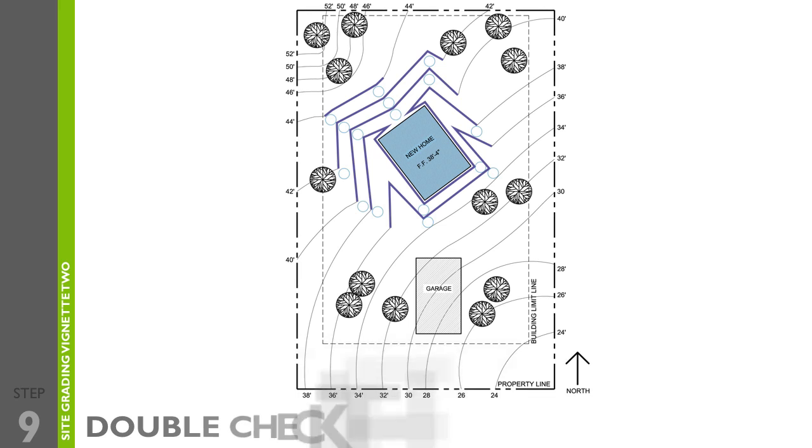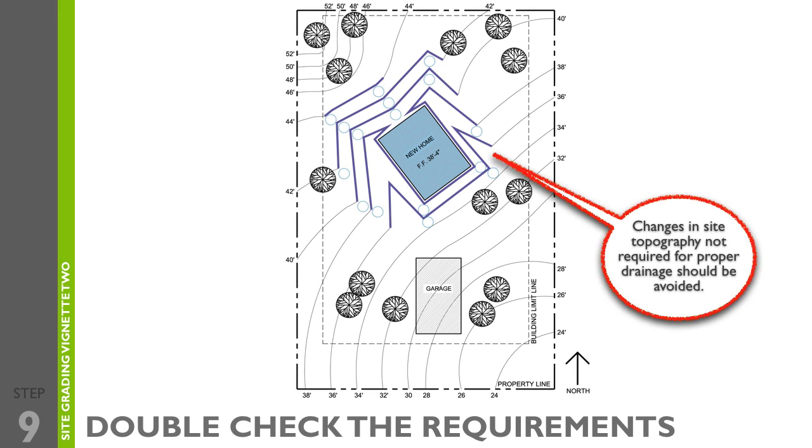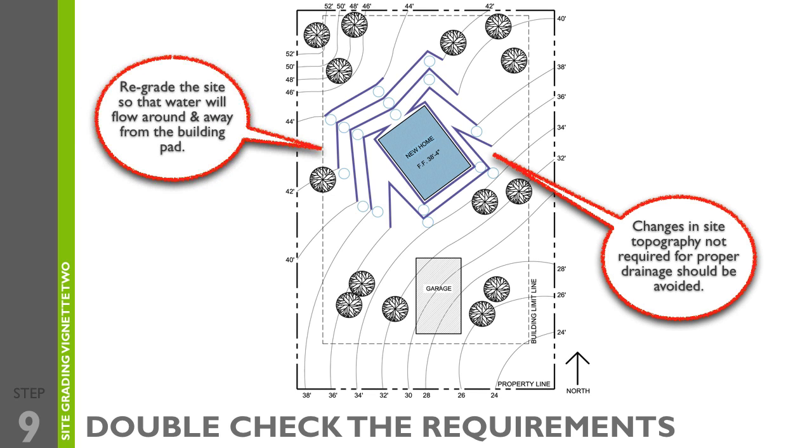Step nine is to double check the requirements. Check your solution against your notes from the program to make sure all requirements are met. Use sketch lines and circles to make sure the minimum and maximum slope requirements are met as well.